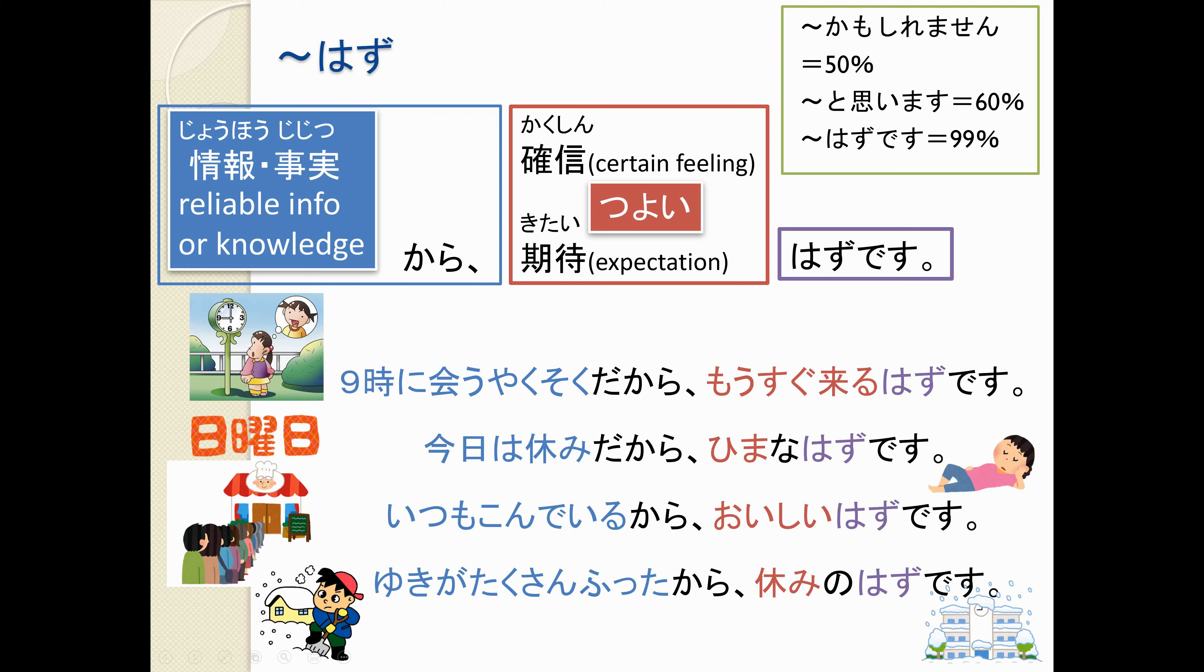くじに会う約束だから、もうすぐ来るはずです。 We see this translated as should. It's not something that you're hoping for, per se. It's something that you are quite sure will happen. So, a lot of the time this gets translated as should.